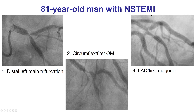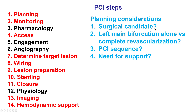So in summary, we have an 81-year-old gentleman with three major bifurcations: left main, circumflex-obtuse marginal, and LAD-diagonal bifurcation. The key question is whether to do PCI or send the patient to coronary artery bypass graft surgery. The patient was 81 years old and was seen emergently by the surgeons who did not want to proceed with emergent coronary bypass graft surgery. So PCI is indicated, given the urgency with the patient having ongoing chest discomfort.